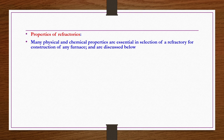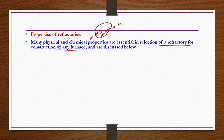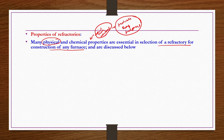Properties of refractories: many physical and chemical properties are essential in selection of a refractory for construction of any furnace. Physical properties include porosity, strength, heat capacity, and conductivity. Chemical properties involve how the refractory interacts with products, slags, or fuel gases within the furnace.